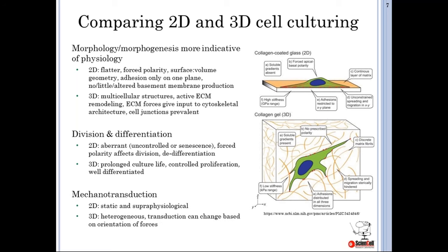Mechanotransduction — how the cell senses and converts mechanical stimuli into electrochemical signaling — is drastically altered in traditional 2D cultures. The ECM is not dynamic and is very rigid, so it's not easily remodeled. The mechanical input into the cells is therefore far greater than you would see normally. These effects are again largely mitigated by culturing the cells in a soft 3D matrix that the cells can remodel on their own terms.